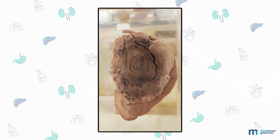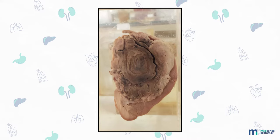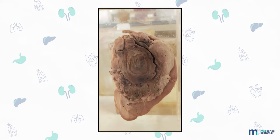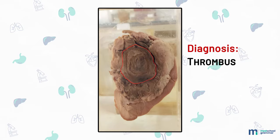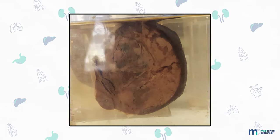Specimen of kidney measuring 15 by 10 by 1 centimeter. External surface shows few depressed scars and areas of hemorrhage. Cut surface: majority of cut surface occupied by a large 10 by 8 centimeter gray firm lesion showing alternate light and dark lines of Zahn — thrombus.